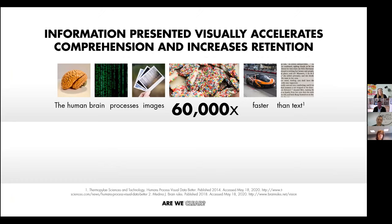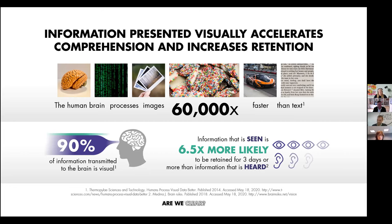A few principles of effective communication: anything presented visually accelerates comprehension and increases retention. We process images about 60,000 times faster than text — a picture is worth a thousand words, and never has that been more true. A picture might draw your attention and make you click and want to learn more. About 90% of the information transmitted to the brain is visual — we have more receptors for visual communication. And if we see information as well as hear it at the same time, we're more likely to retain it over a longer period.